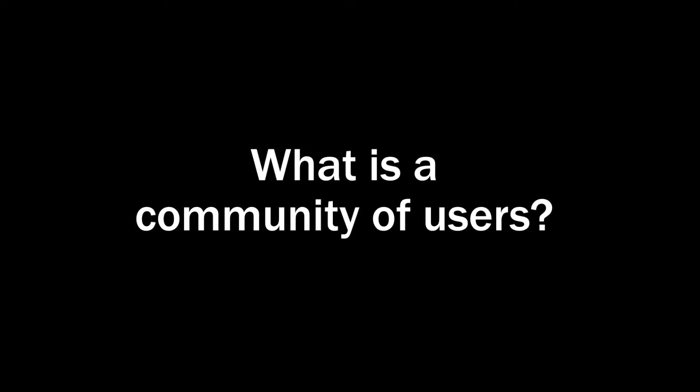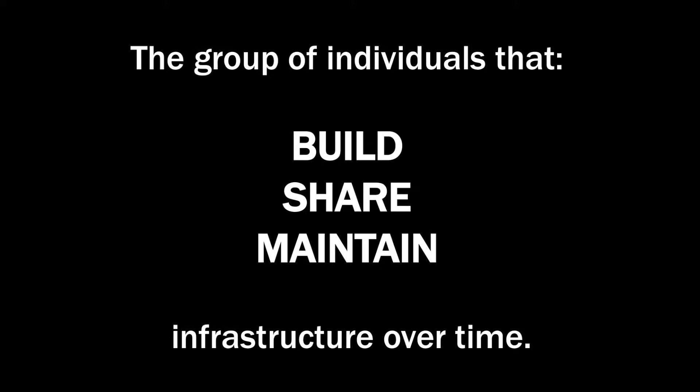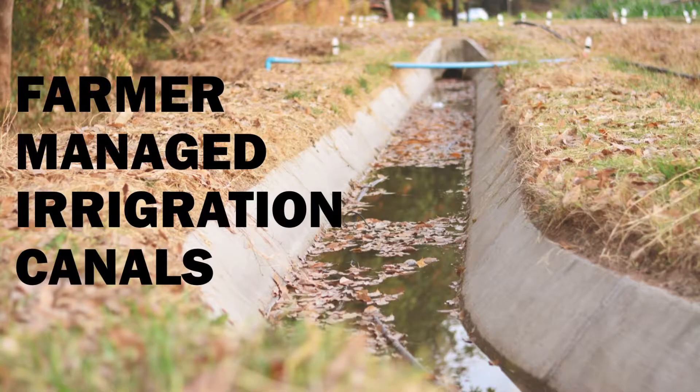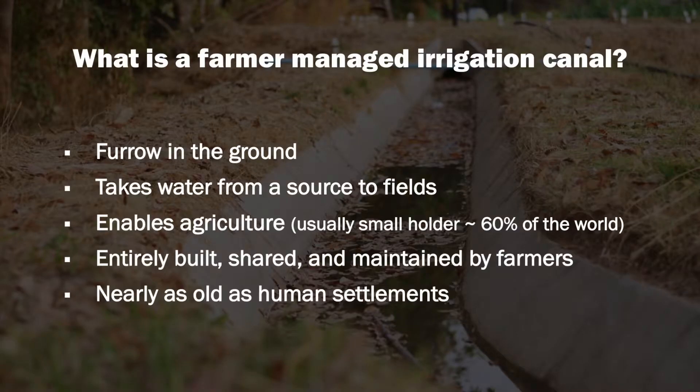So what's a community of users? We have digital infrastructure and physical infrastructure being used, shared, and maintained by communities. A community of users is a group of individuals that build, share, and maintain infrastructure over time. It's not enough to just build it — you have to maintain it. For the physical example: farmer-managed irrigation canals are built, shared, and maintained by the farmers themselves, not a third party. It's a furrow in the ground that takes water from a source like a stream to fields, enabling agriculture. As human beings, we have been doing this for a long time.